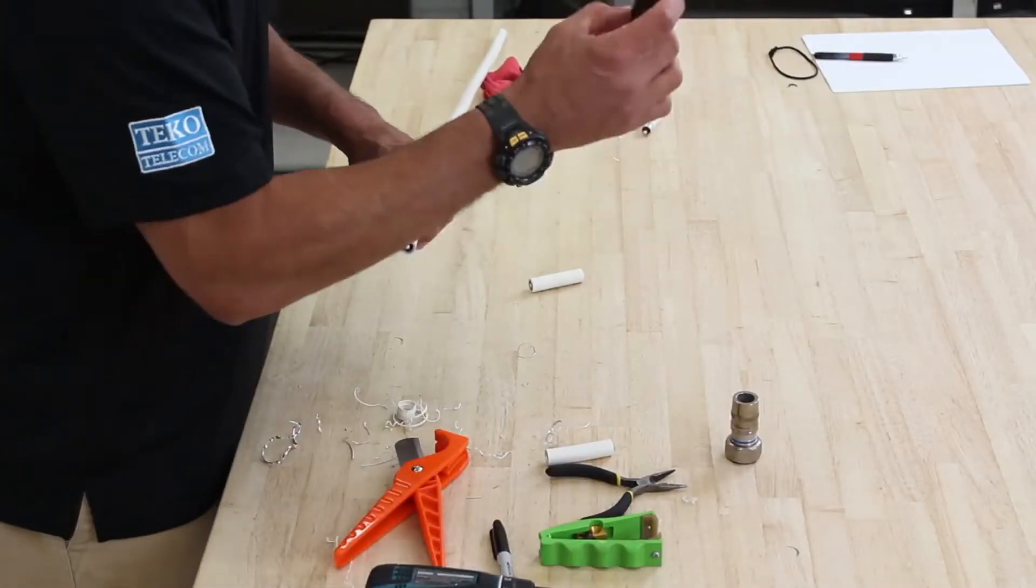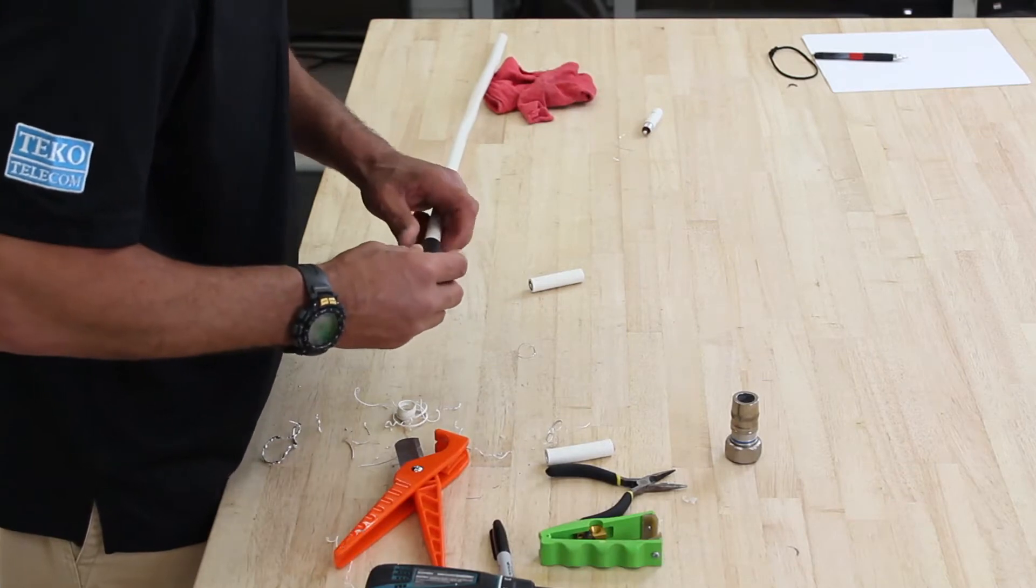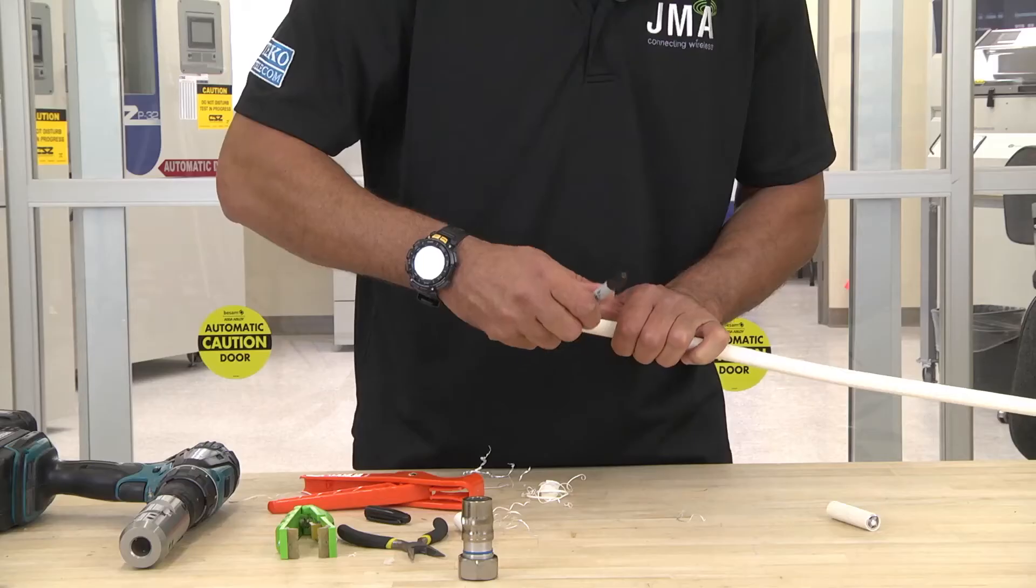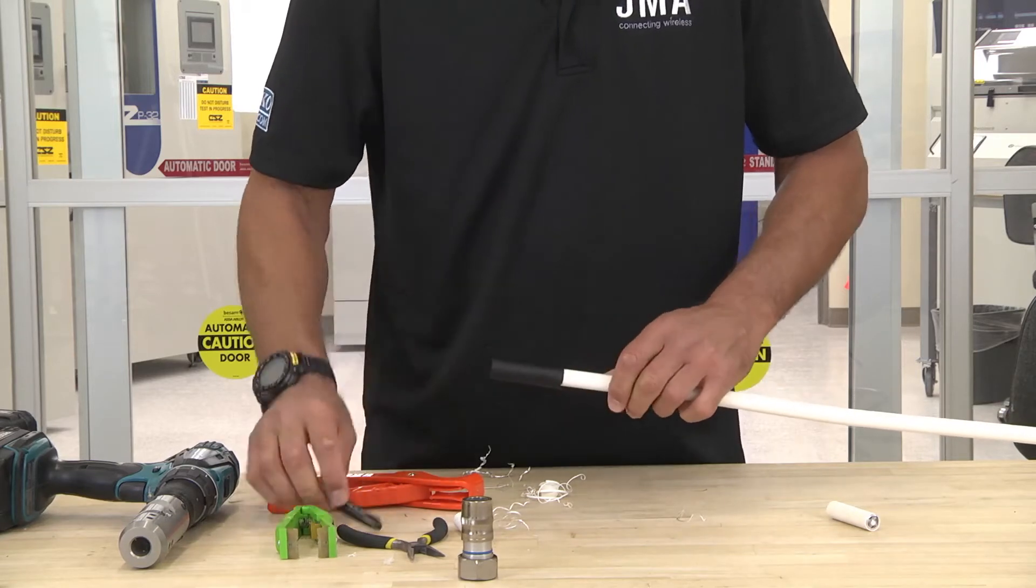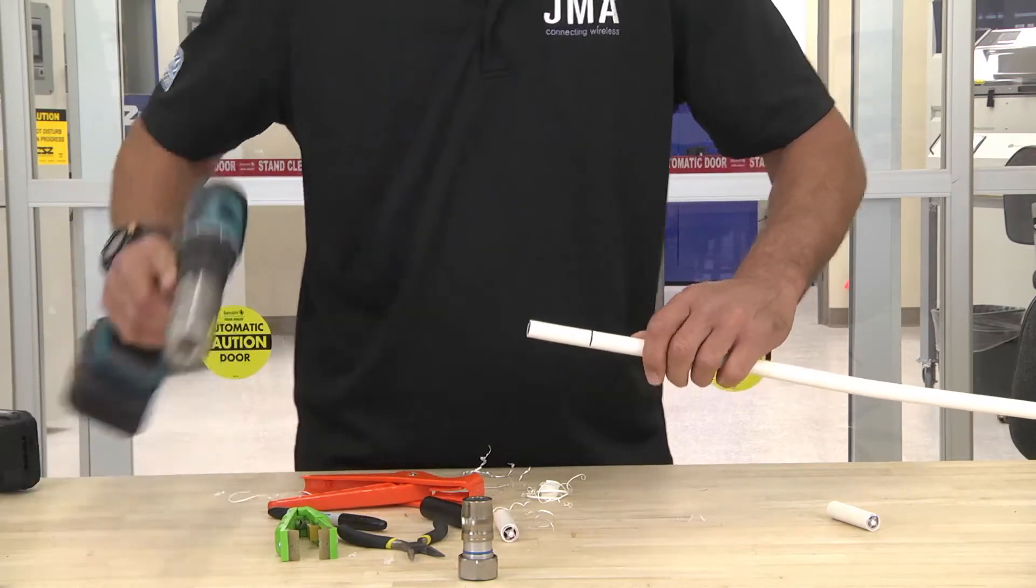Then you want to take a marker and insert it and make sure it's flush with the cable. Mark that, and we put this on there so that we make sure that we don't finish our prep at another dielectric point.